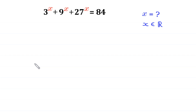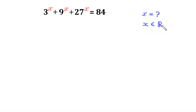Welcome to how to solve this very nice exponential equation: 3 to the power x plus 9 to the power x plus 27 to the power x is equal to 84. We need to find all possible values of x, where x is a real number.